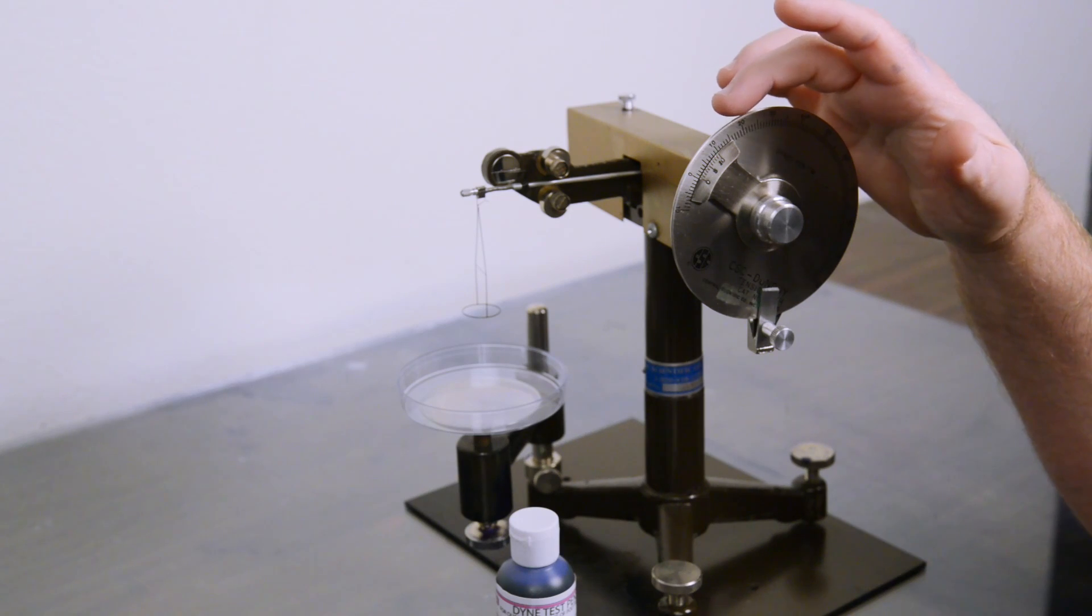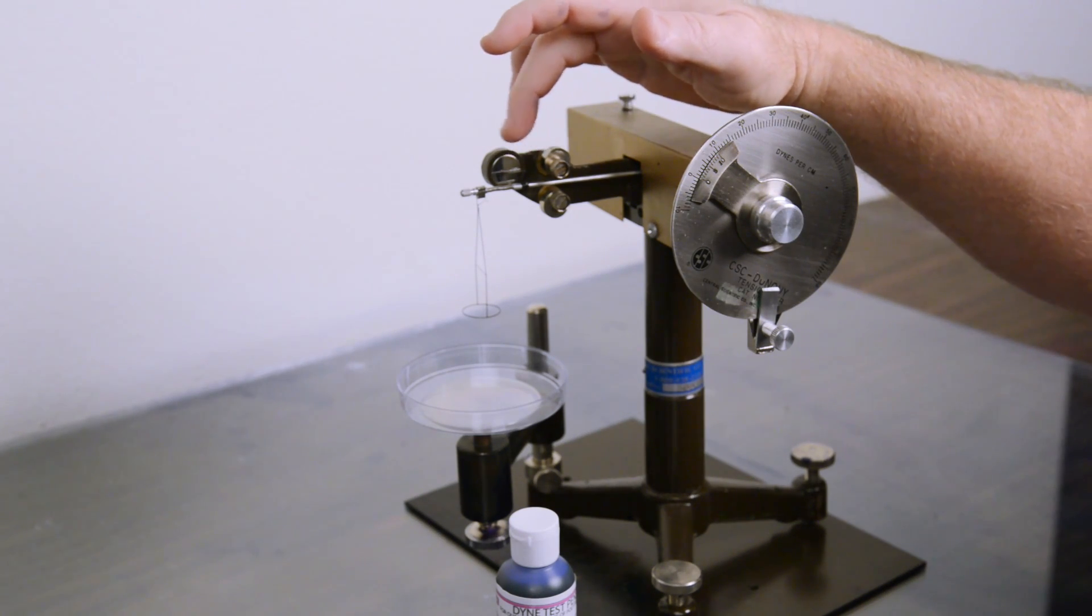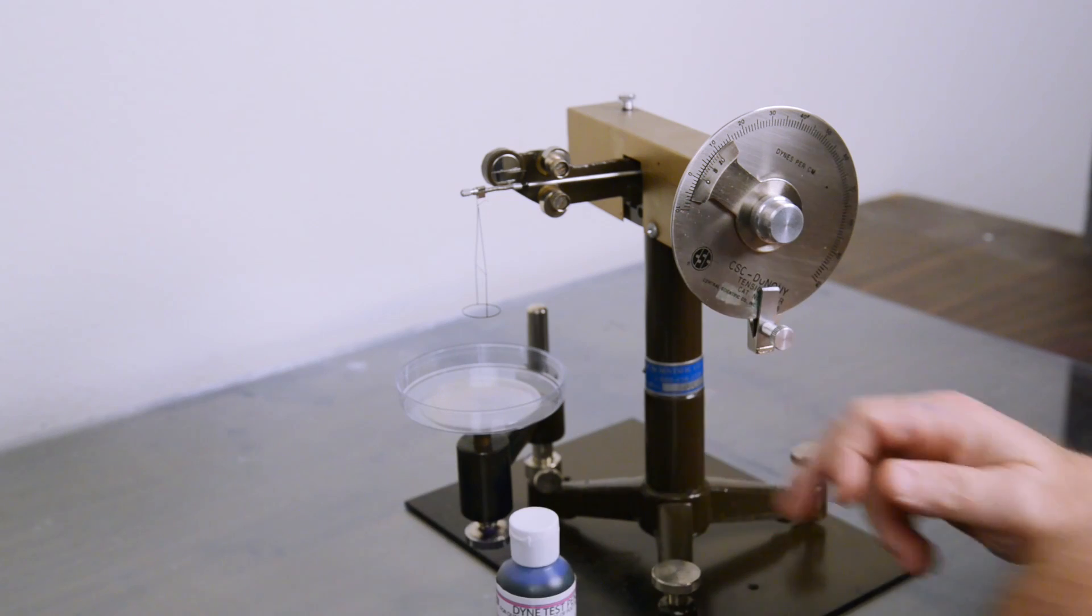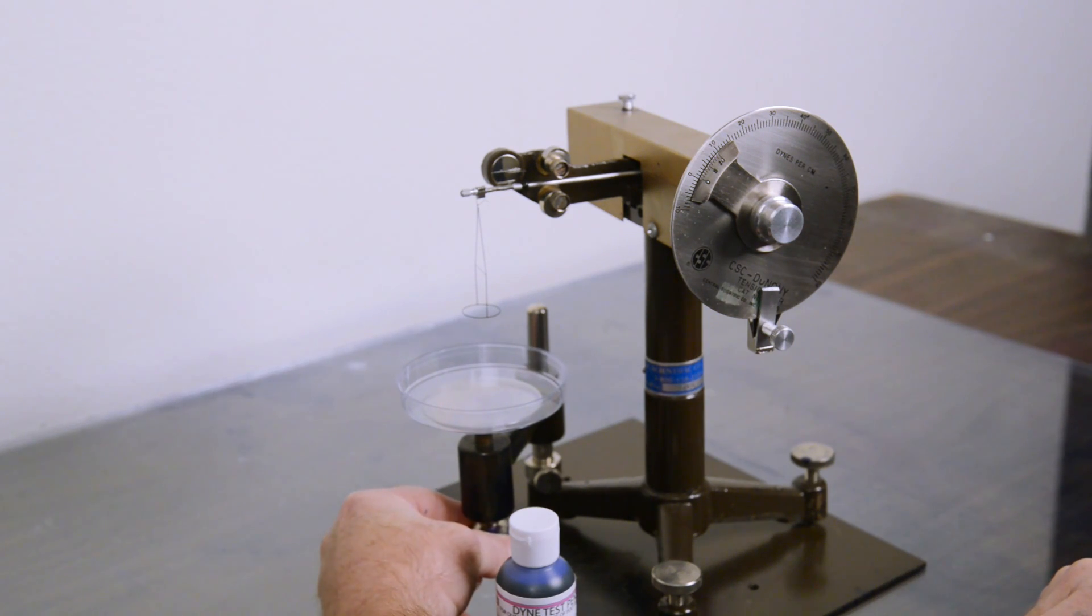The dial is zeroed out, the mirror line of the rod is lined up, clean petri dish, and the arm is raised all the way up to the top.